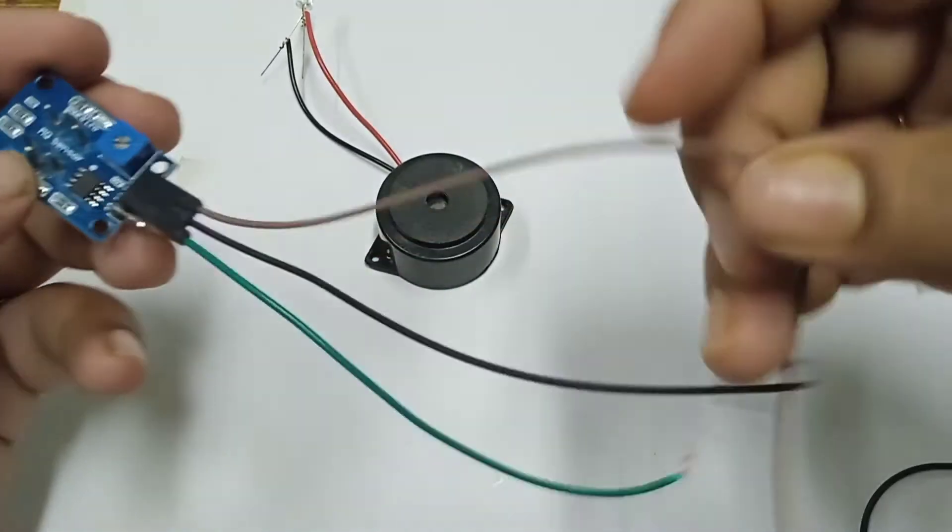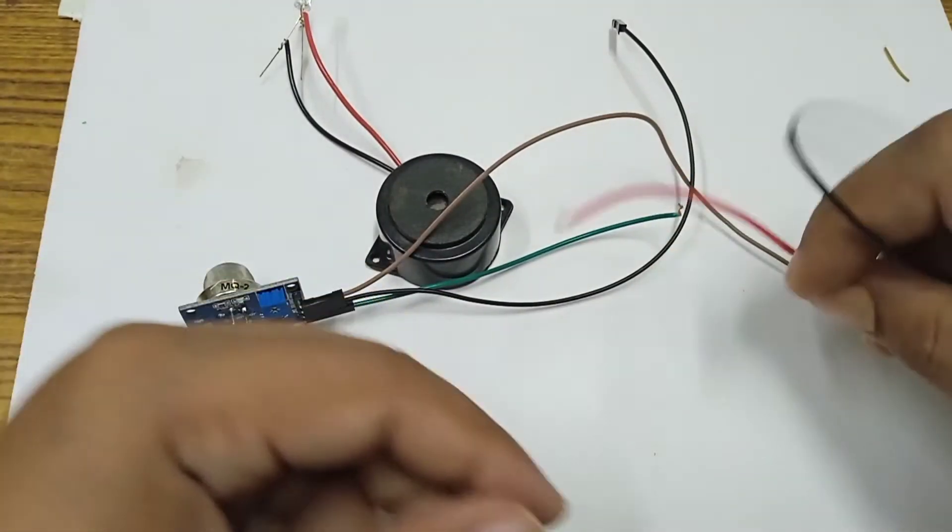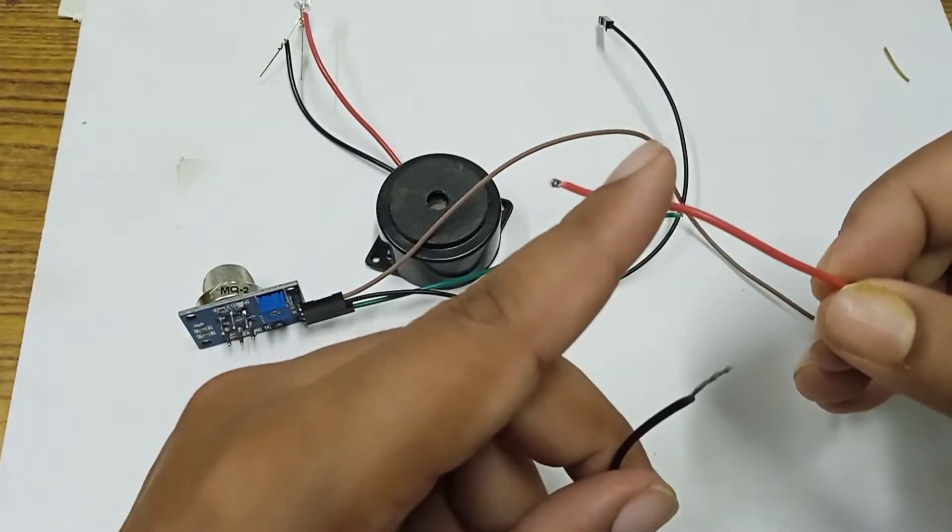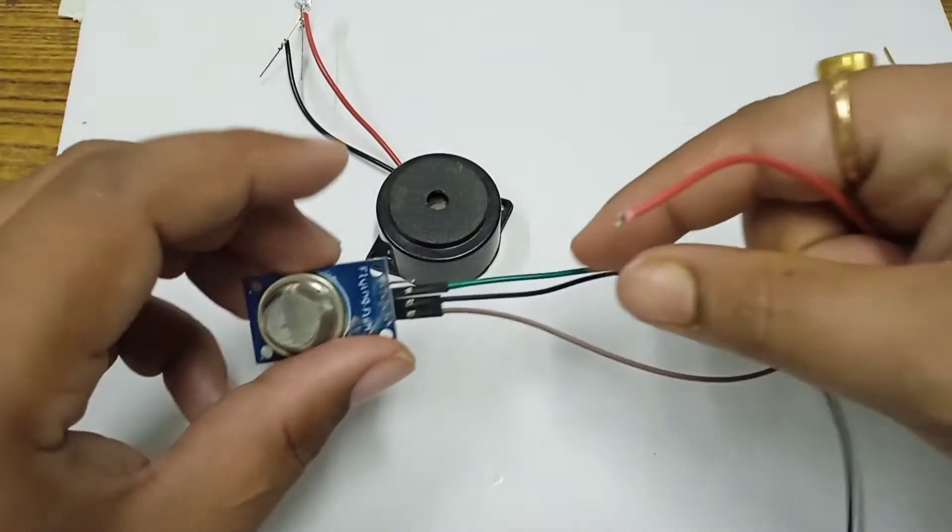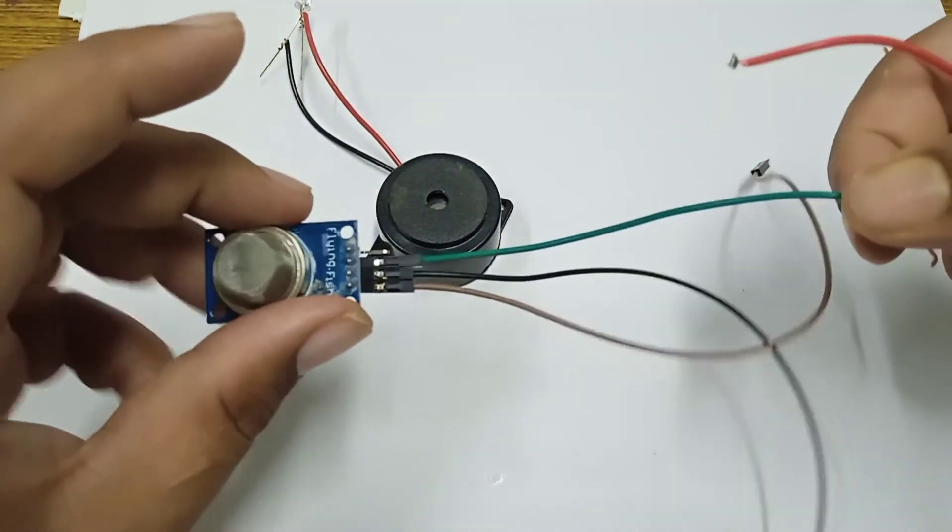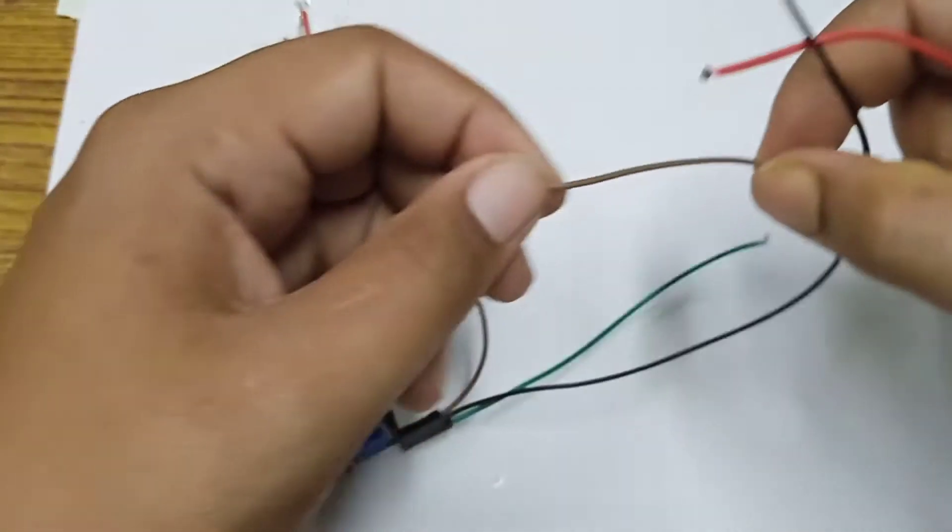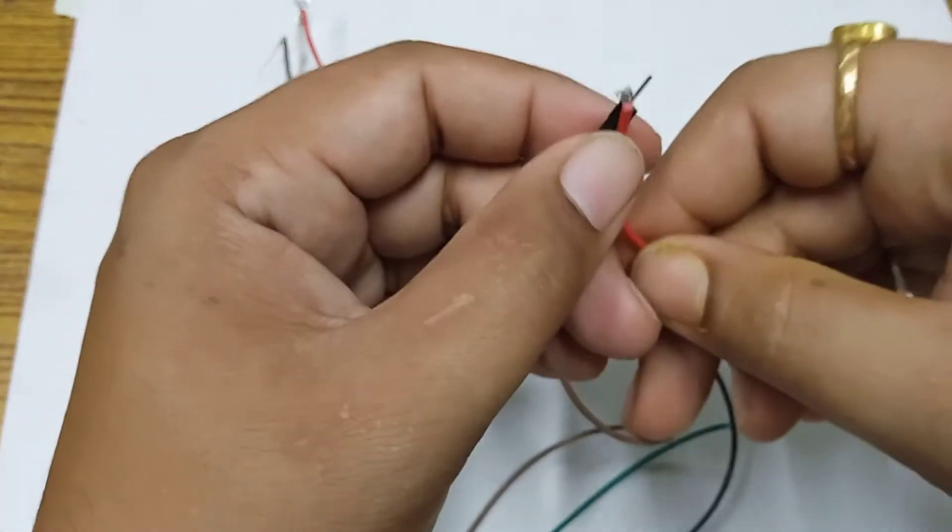And now this side, you can see here I have a 5 volt power supply. This is the positive and this is the negative. So what I do, I connect this VCC to this red terminal, that means plus 5 volts.